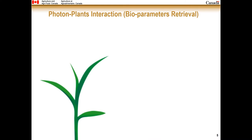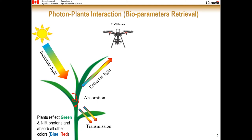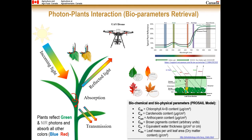Here is how photon-plant detection generally takes place. Solar light intensity falls on different portions of the plant — some is transmitted, some absorbed, and some reflected back to the sensor. The plant generally reflects green and near-infrared photons and absorbs other colors from blue to red. Here is a typical hyperspectral profile of stressed versus healthy plants, with wavelength on the X-axis and plant reflectance percentage on the Y-axis. A healthy plant reflects less in the green spectrum, while a stressed plant reflects more. Using biochemical and biophysical parameter models, we can retrieve different pigment concentrations including chlorophyll, carotenoid, anthocyanin, water thickness, and leaf mass per unit leaf area.